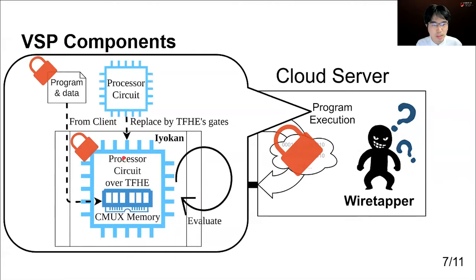After the construction, Iyokan evaluates the replaced circuit for the encrypted program iteratively. Handling this evaluation phase is the main role of Iyokan. In other words, we can say that Iyokan is an abstraction layer for running logic circuits over TFHE. Due to the time limit, we will only discuss the gate scheduling process of Iyokan, which is one of the most important functionalities. After that, we will briefly summarize the performance results of VSP.